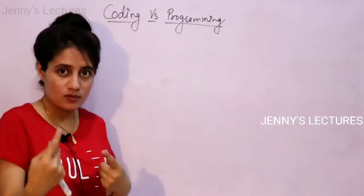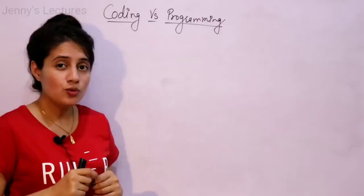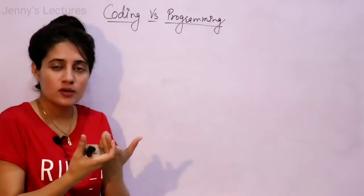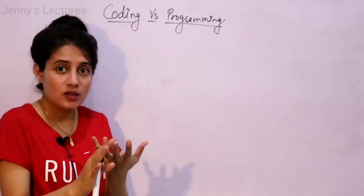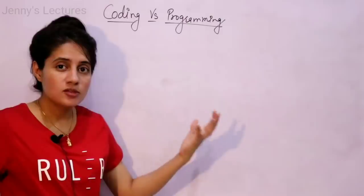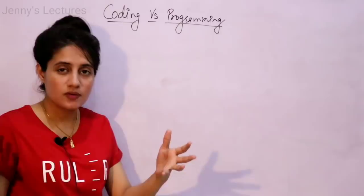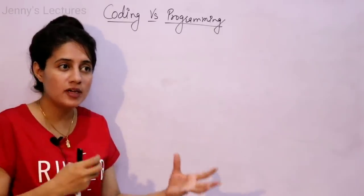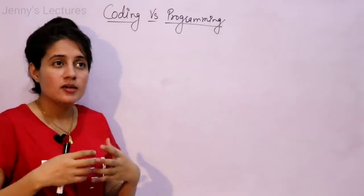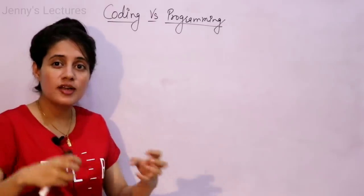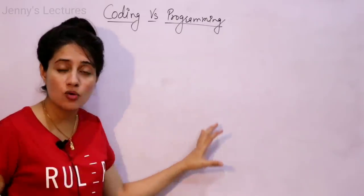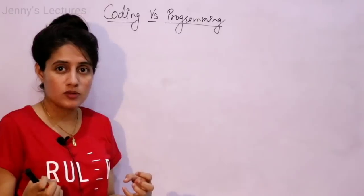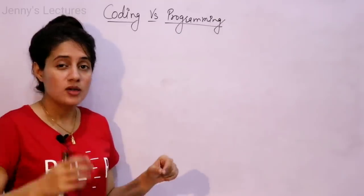For coding, you only need to know the syntax and structure of a programming language — just how to write the code, that's it. But for programming, since it's broader, the programmer must have analytical skills, use analytical tools, implementation tools, and have knowledge of data structures and algorithms. A programmer should be able to write complex algorithms and solve complex problems — it's not just writing code.